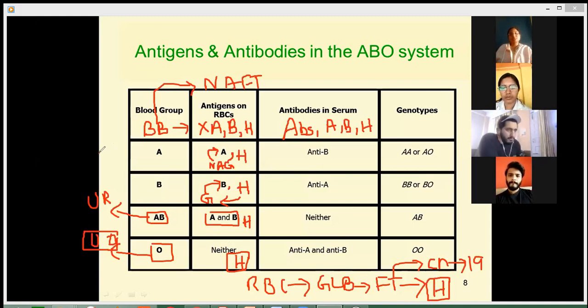If we go for a very rare group discovered by a great Indian doctor, Dr. Bhinde, known as Bombay blood group, there is no activity of fucosyltransferase enzyme. When there is no activity of fucosyltransferase enzyme, there is no A antigen formation, no B antigen formation, and no H antigen formation.